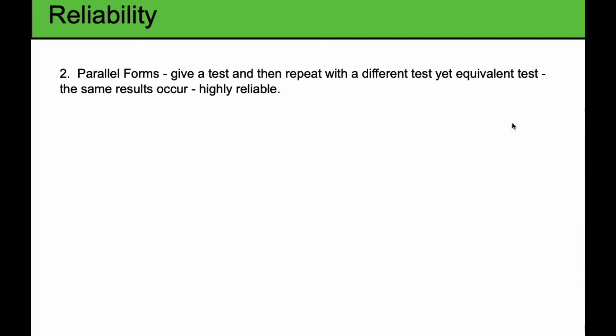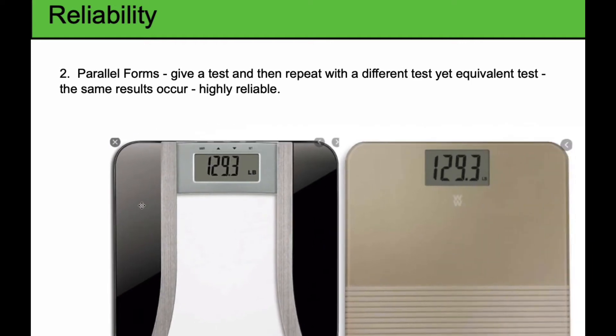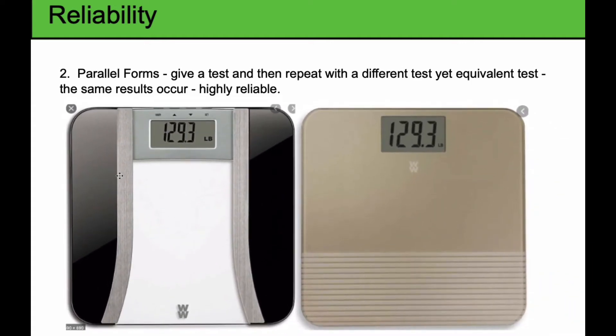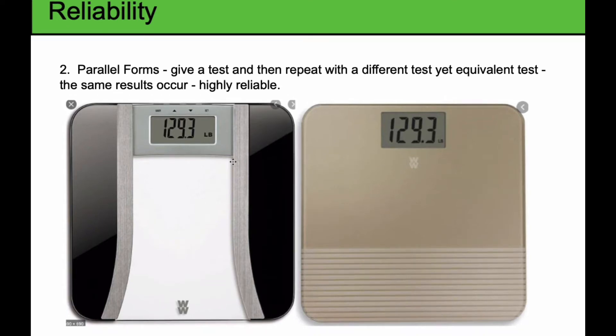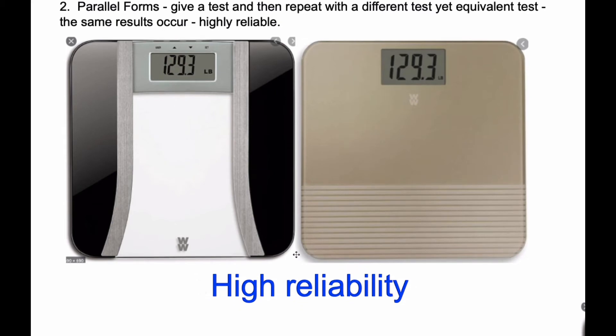The other form of reliability that we talk about is parallel form. Imagine you give a test and you repeat it with a different yet equivalent test. You should get the same results if it's high reliability. Consider the bathroom scale again. If today I stepped on the black scale and I was 129.3 pounds, and then I went over and stood on the gold scale and I got the same result, well, these are different tests, but I got the same result. Therefore, I would believe it to be highly reliable.